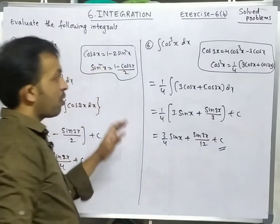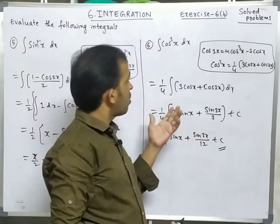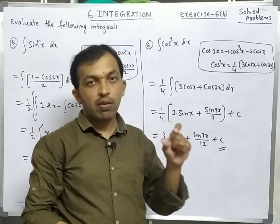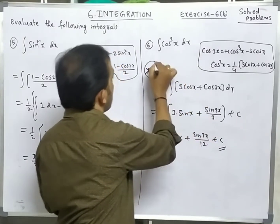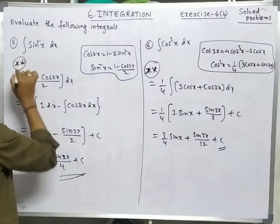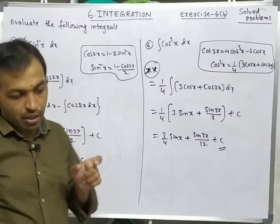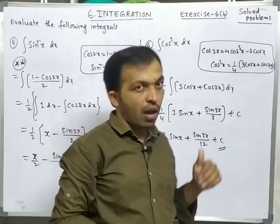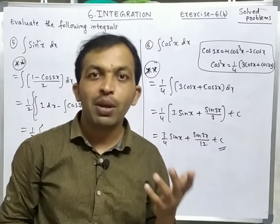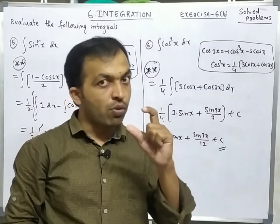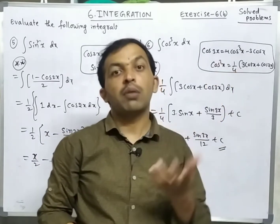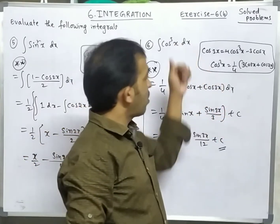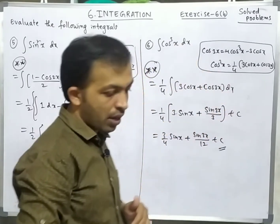Multiplying inside: (3/4)sin x + sin 3x/12 + c. Practice this step 2-3 times. If we have sin²x or cos²x, convert using the double angle formula. If we want integration of sin³x or cos³x dx, use the triple angle formulas for sin 3x and cos 3x.